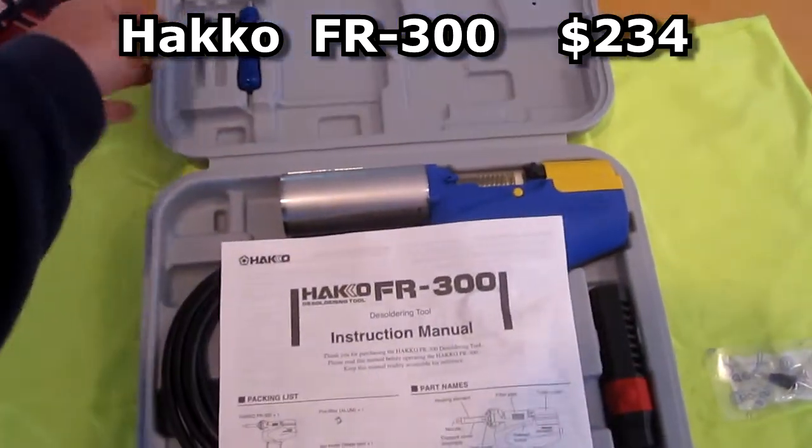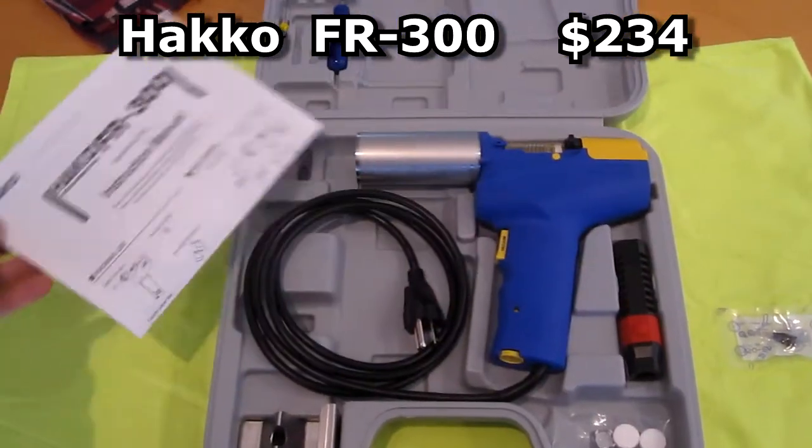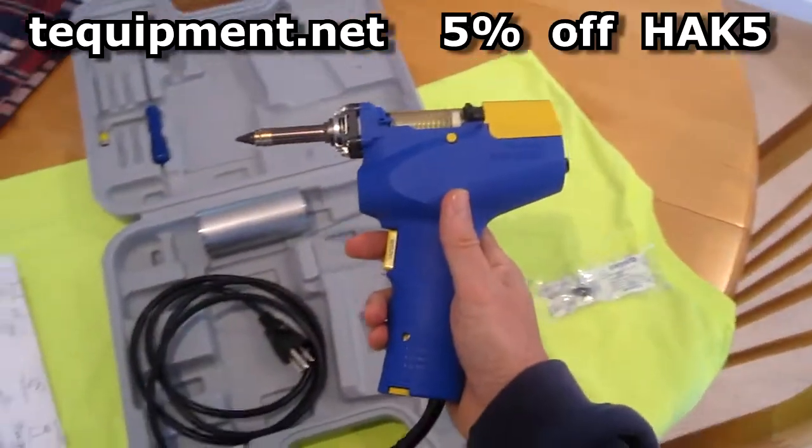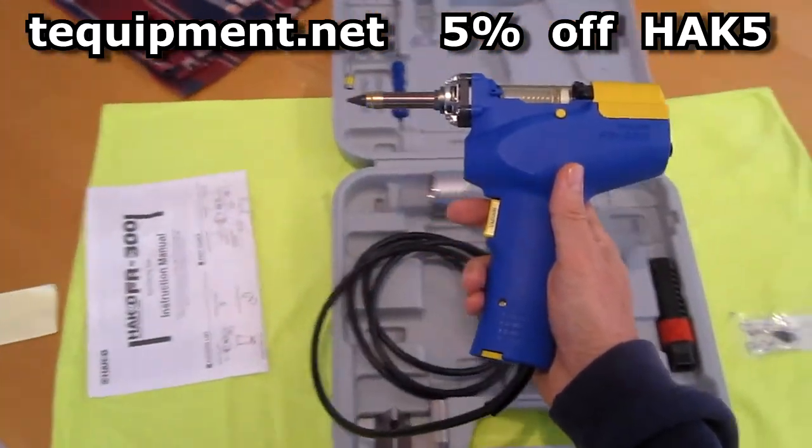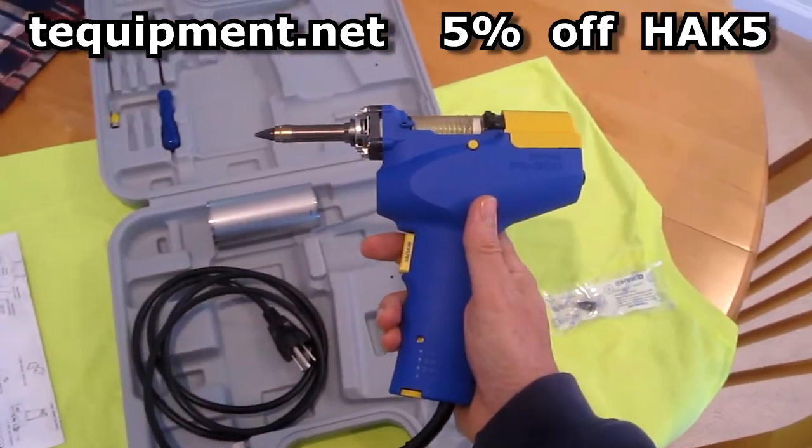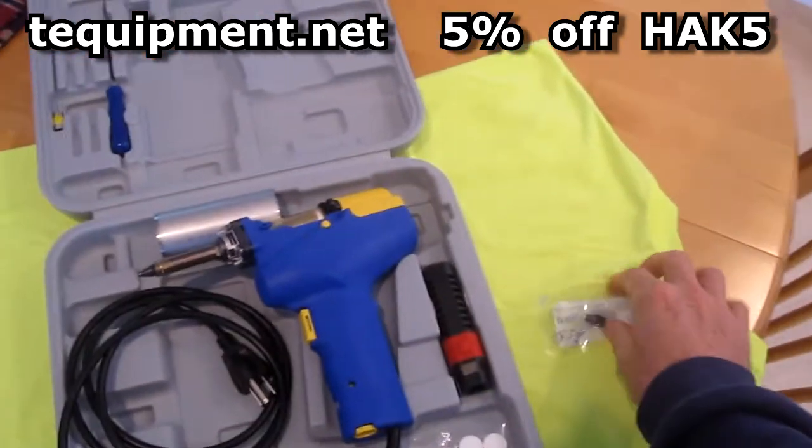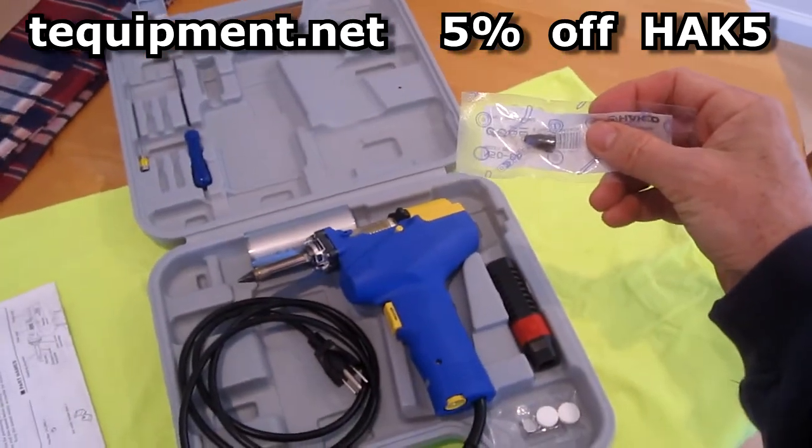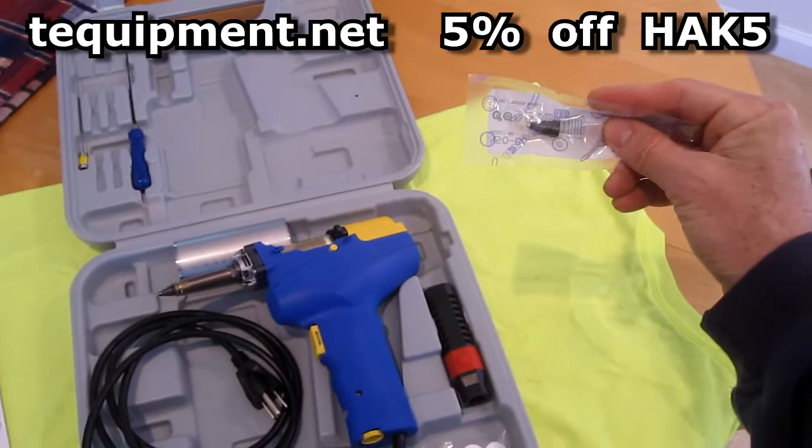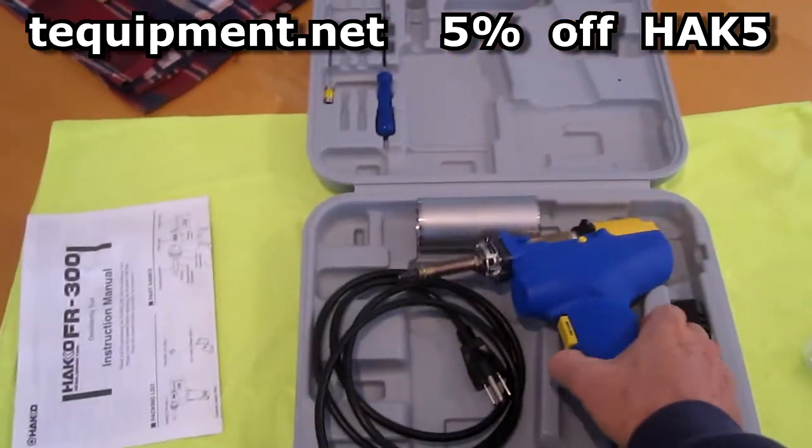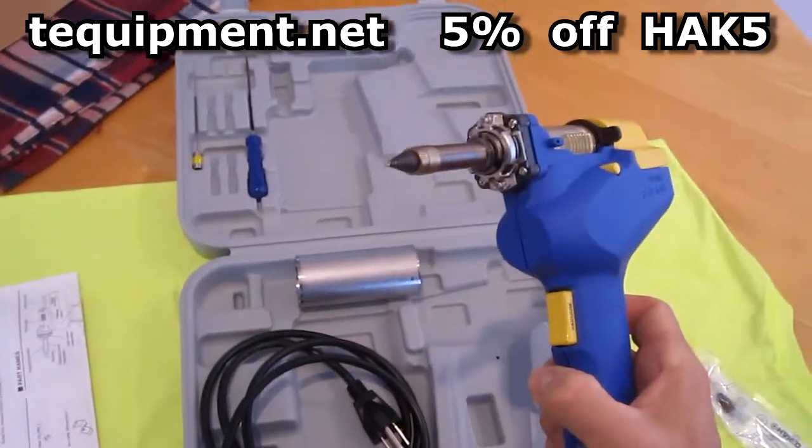This is the Hakko FR300 desoldering tool. I got it on techequipment.net for $234. I also got a 1.6mm tip which costs $17. It comes stock with a 1mm tip.